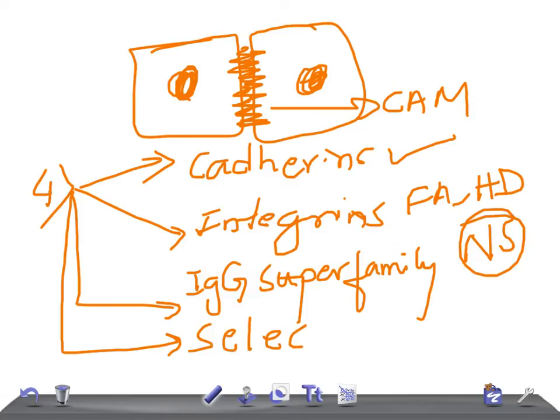And then the last one is the selectins. You might have heard of these. They act as a receptor for carbohydrates — that is the ligand — and mucins, and are found in the platelets and endothelial cells.